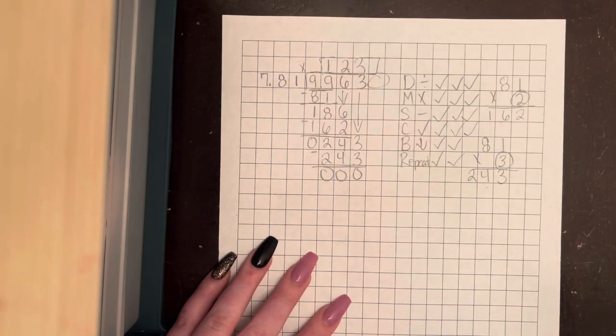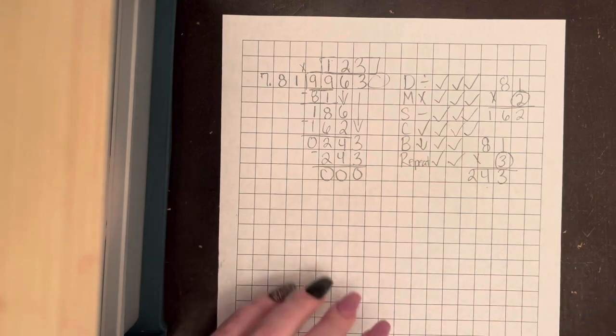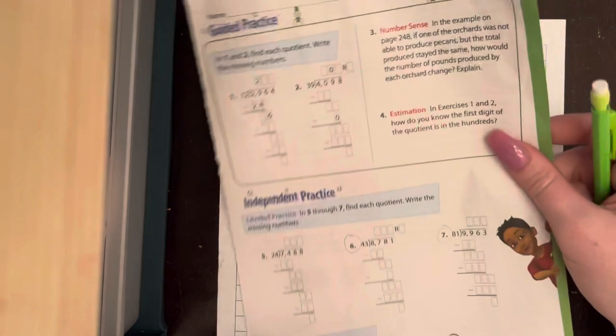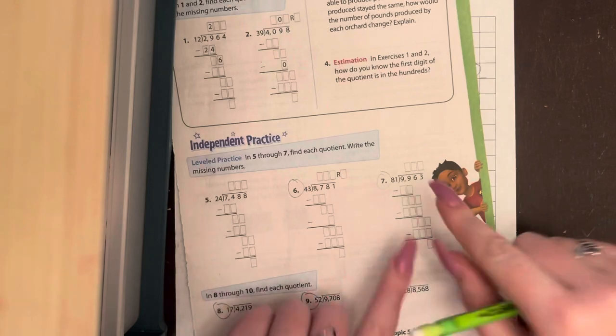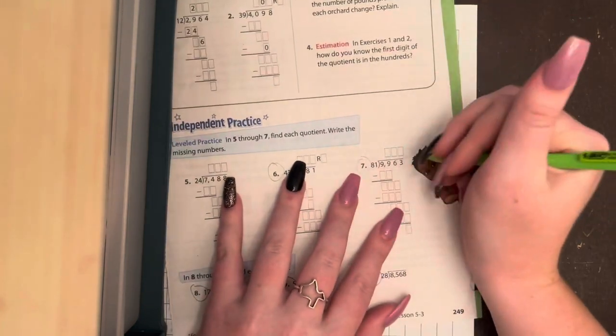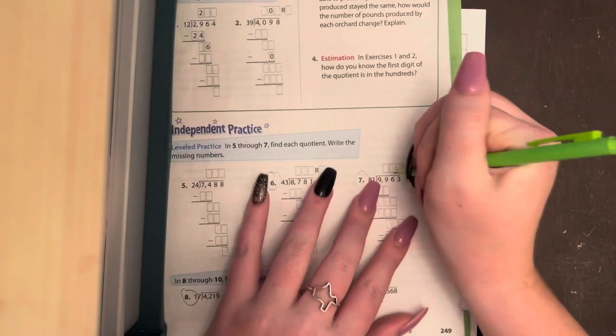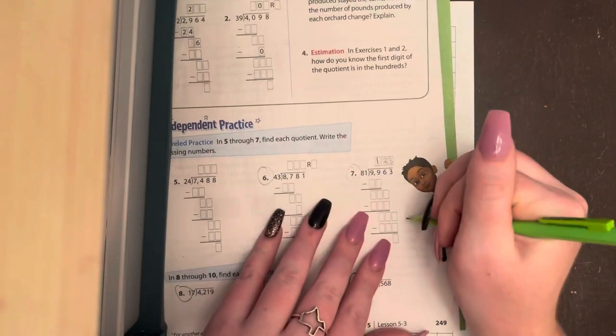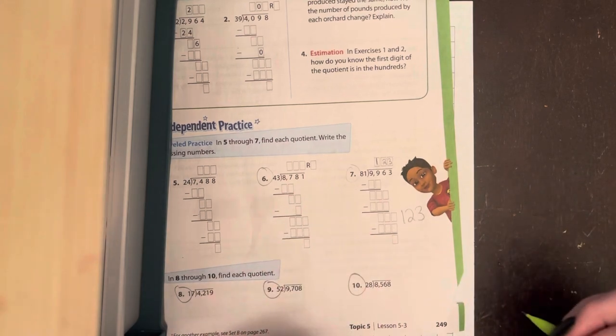Remember, a quotient is our answer to division problem. So we'll go back to our textbook page. On number 7, you do not have to fill in all these boxes because we already did it together. We know that our answer is 123. Or if you want to write it over here, I don't care which way.